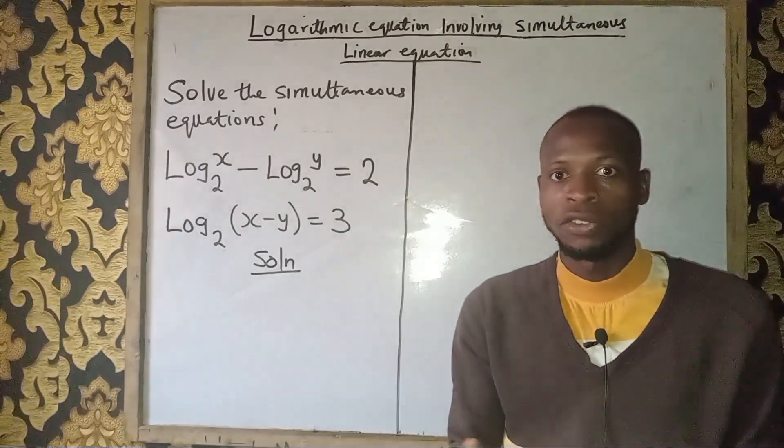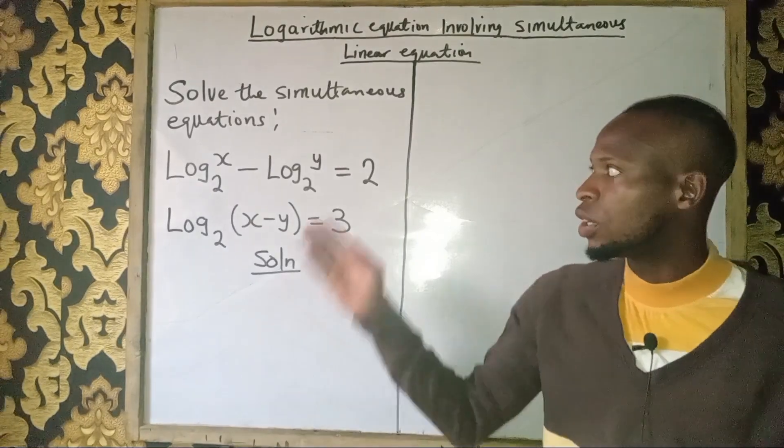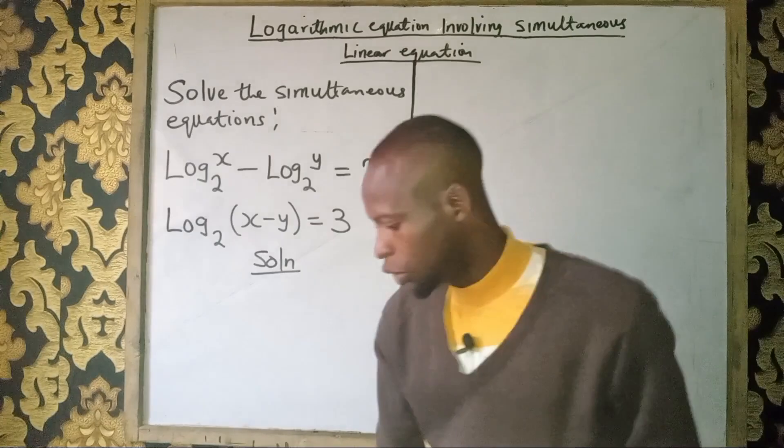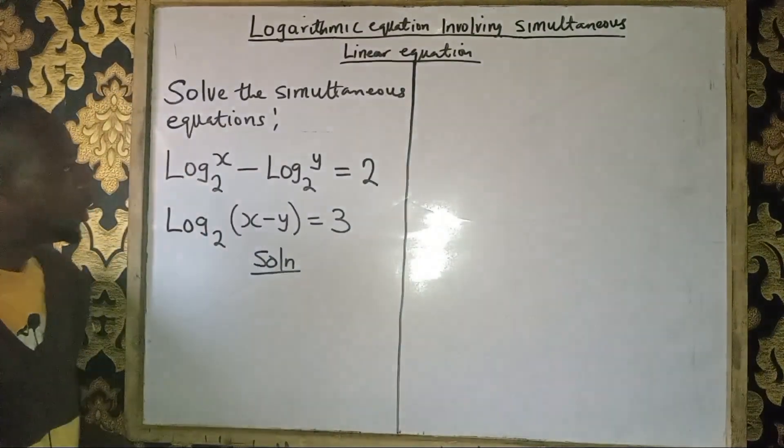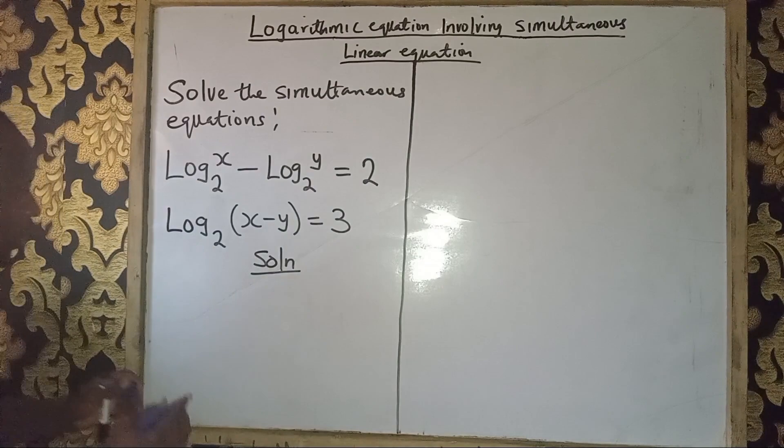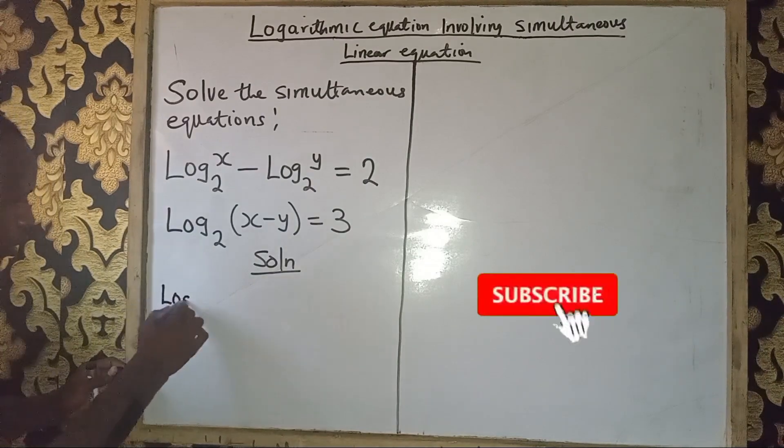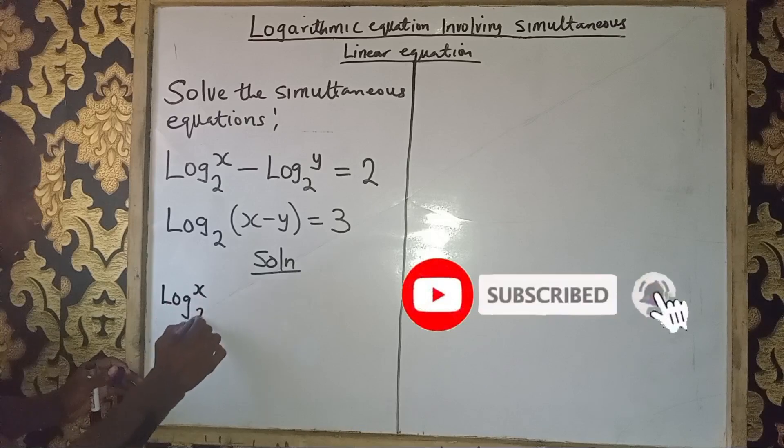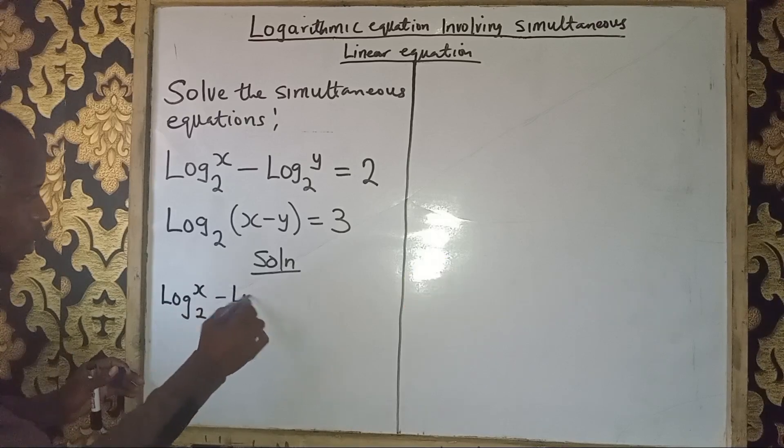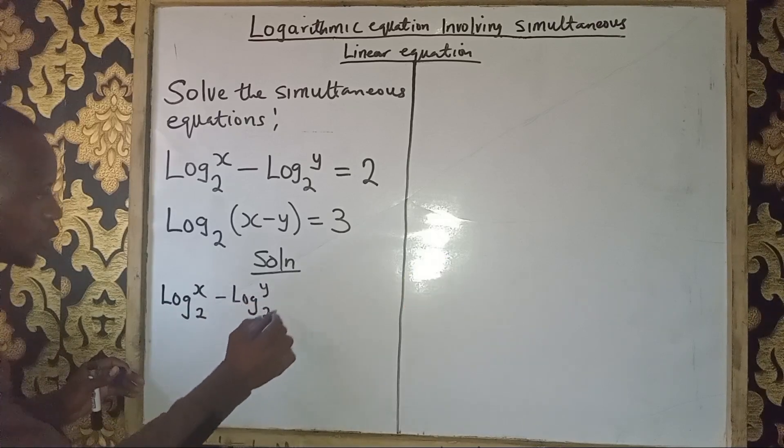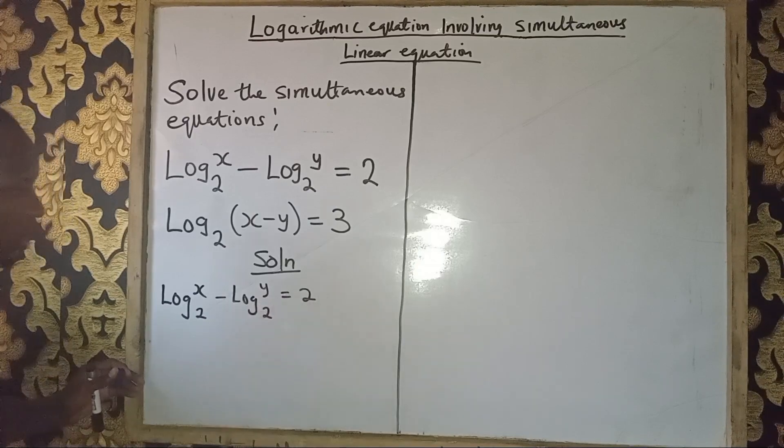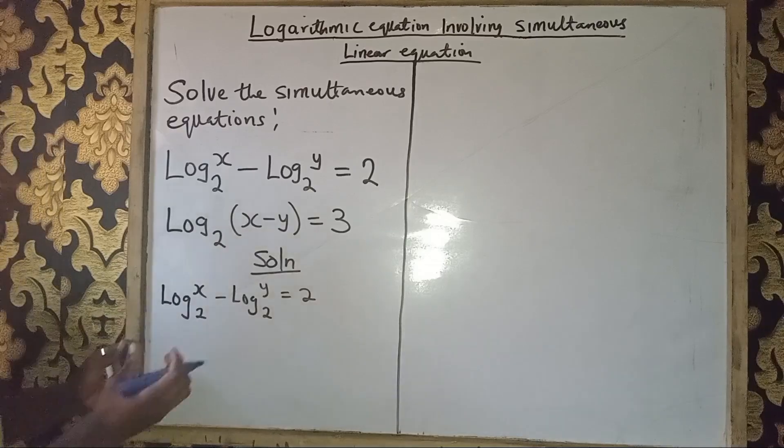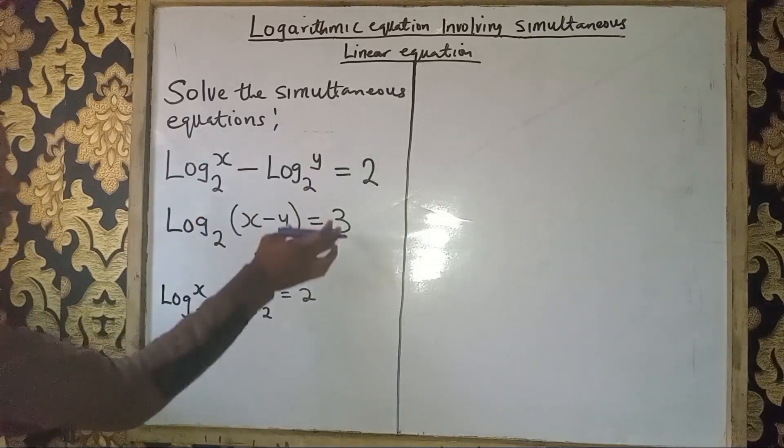The question reads: solve the simultaneous equations. We have log x in base 2 minus log y in base 2 equals 2. That's our first equation. And the second one: log base 2 of (x-y) equals 3.